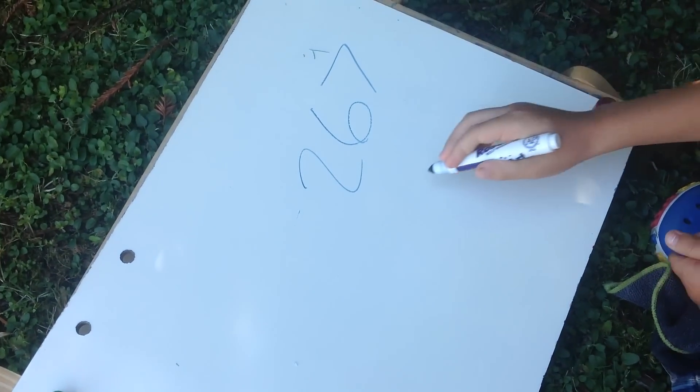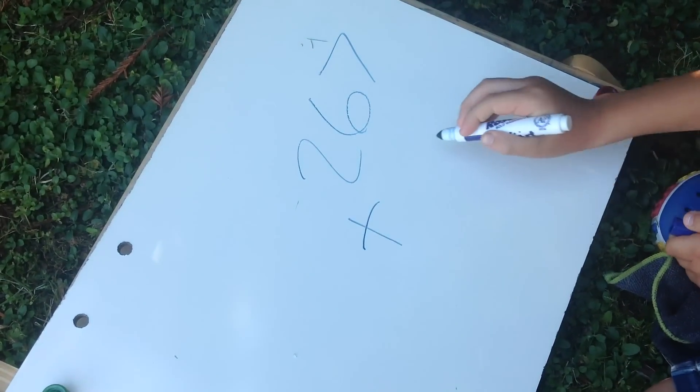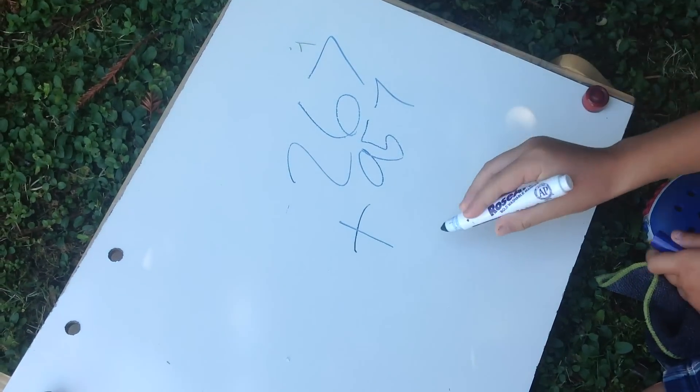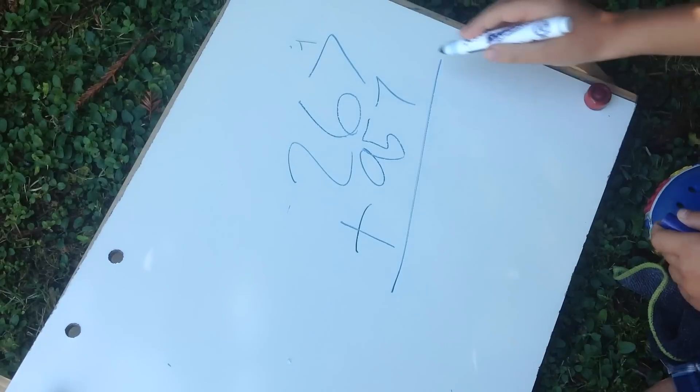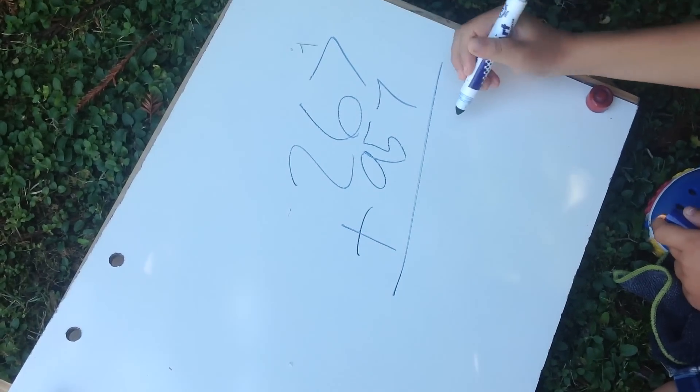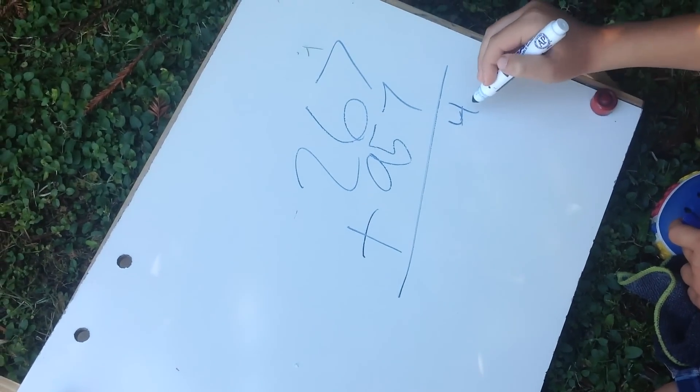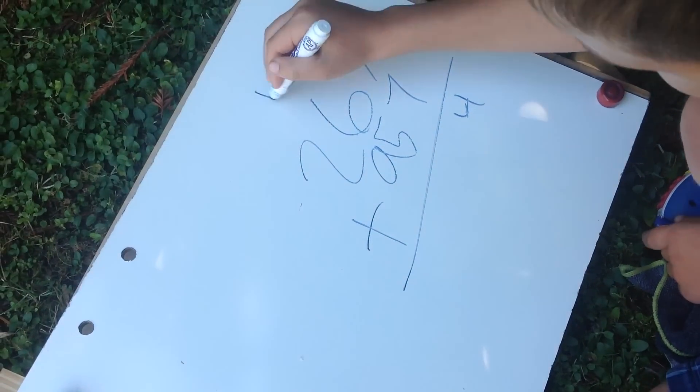267 for example, then we add 957. Then 7 plus 7 is 14. You take the 4, put it here, then the 1 you put here.